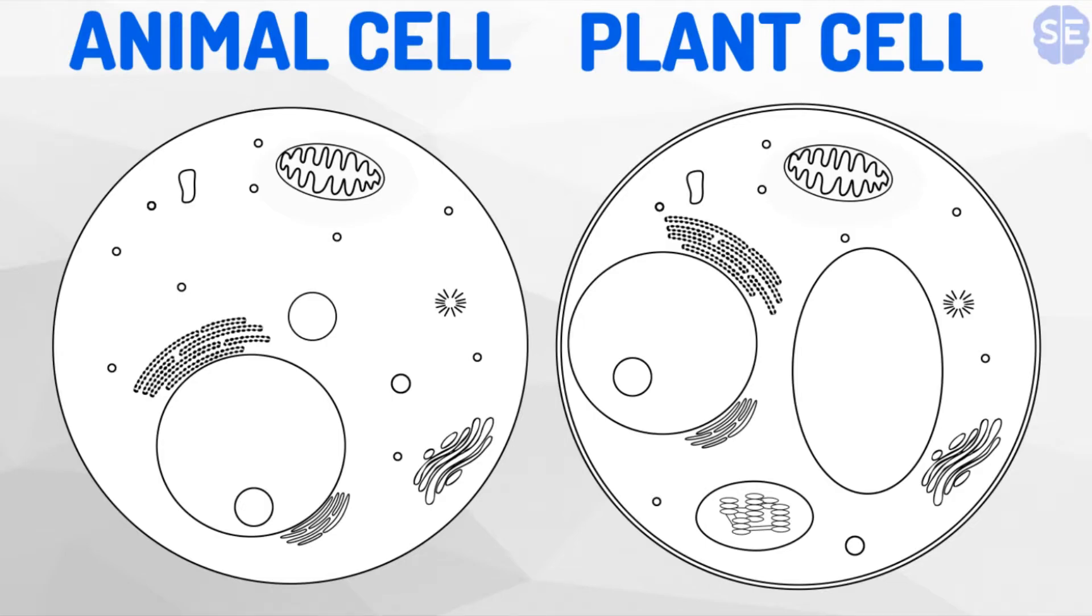Despite animal and plant cells both being eukaryotic, as can be seen here, there are a few visible differences. One of these differences is what encapsulates the cell. The animal cell has a single cell membrane, whilst the plant cell has both a cell membrane and a cell wall. The cell wall provides strength and protection to the plant cell.